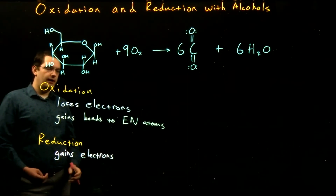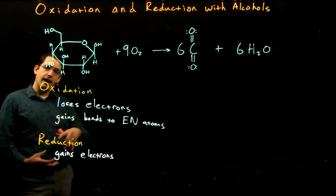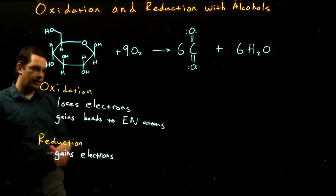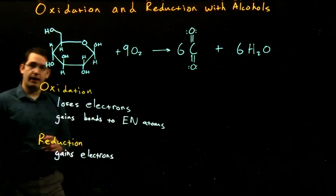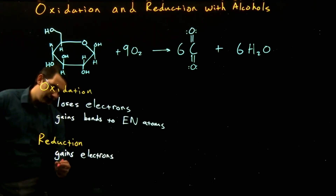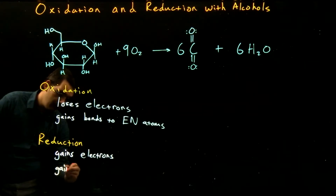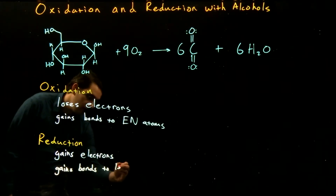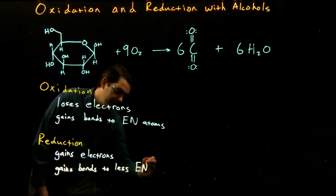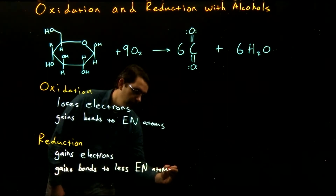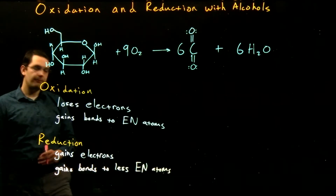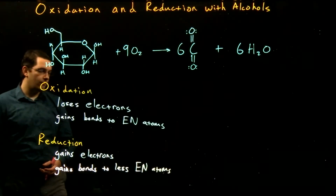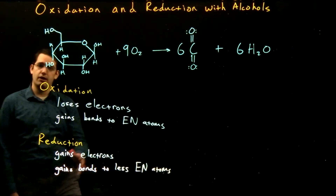We assign an oxidation number of +1 for every bond to a more electronegative atom, as that more electronegative atom is pulling away electrons and reducing our relative share of those electrons — the relative charge increases. In reduction, we say that we are gaining bonds to less electronegative atoms, and we are gaining a larger share of electrons because those less electronegative atoms are more likely to share their electrons. So every bond to a less electronegative atom gives a −1 in our overall oxidation number.